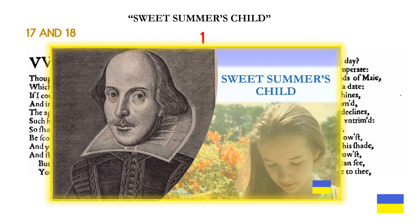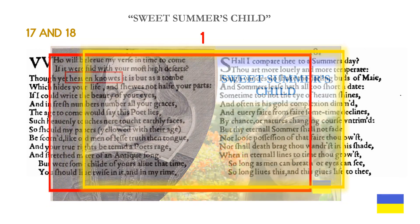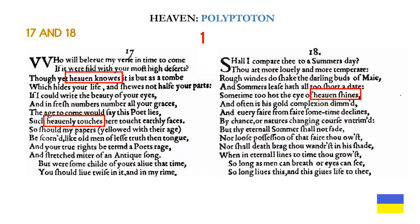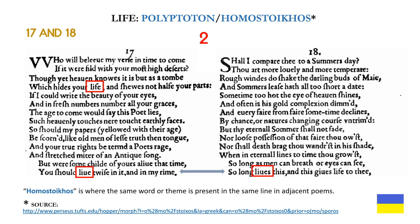Sonnets 17 and 18 were covered in my video Sweet Summer's Child. Viewers are encouraged to go to that one for the background behind these rhetorical connections. Heaven is an example of polyptoton: heaven knows and heavenly touches from sonnet 17 refer directly to heaven shines in sonnet 18. The word life is an example of polyptoton and what I call homo stoikos — where the same word or theme is present at the same line in adjacent poems. I have not seen this in any other collection of poems. So we have life and live in sonnet 17 and lives in sonnet 18.